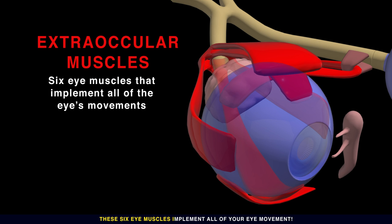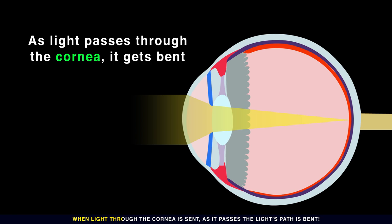These six eye muscles implement all of your eye movement. When light through the cornea is sent, as it passes, the light's path is bent.